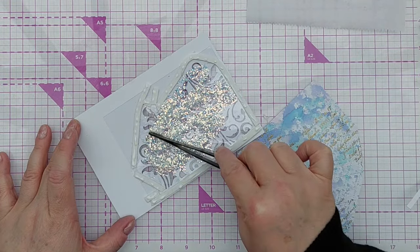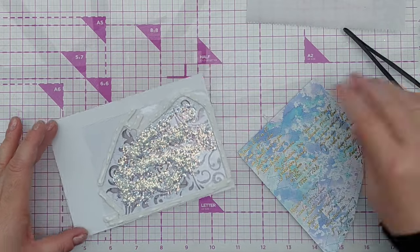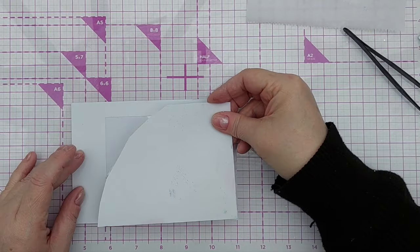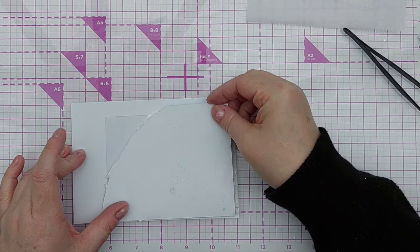Next, I added some chunky iridescent glitter. I think I did add a little bit too much. I probably could have got away with about half of the amount I added, but never mind.